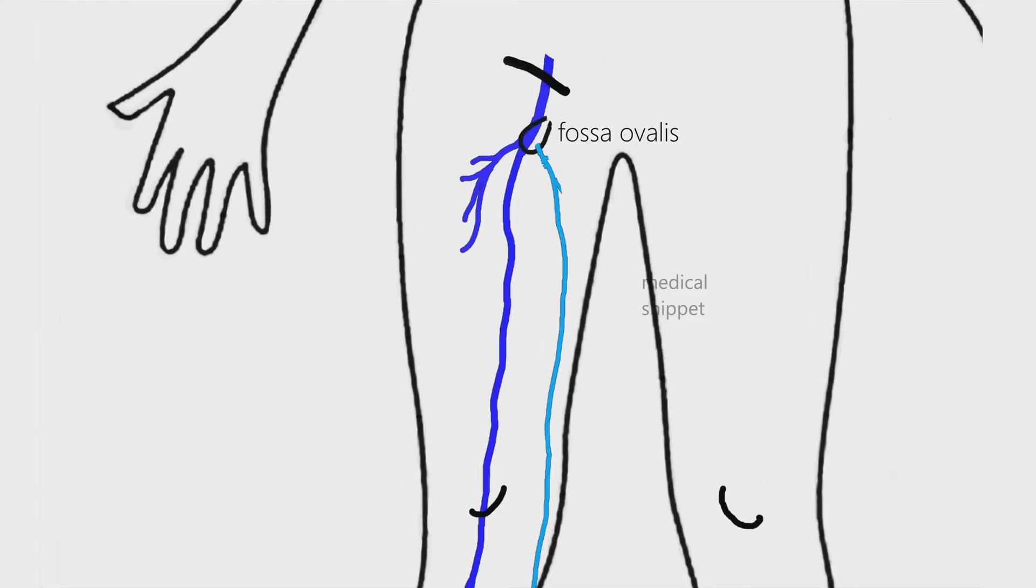In the thigh, the greater saphenous vein ascends anteriorly, enters the fossa ovalis, pierces the cribriform fascia, and empties into the common femoral vein at about 4 cm inferior and lateral to the pubic tubercle.